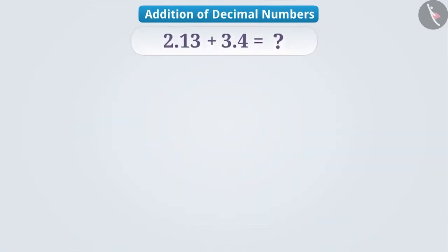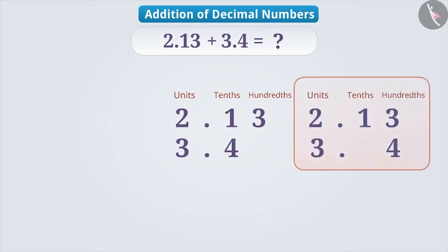In order to find the addition of decimal numbers mathematically, we write these numbers one below the other like this. But while doing so, it is important to focus on their places. We cannot write 2.13 and 3.4 like this. Can you tell the reason why? Think for a while.